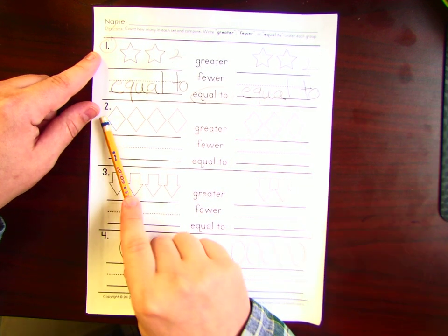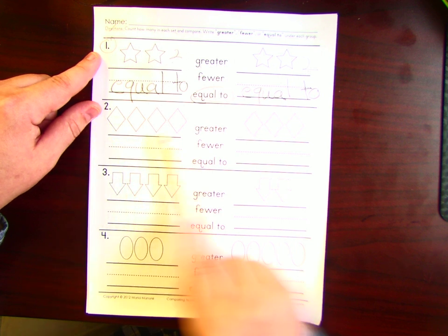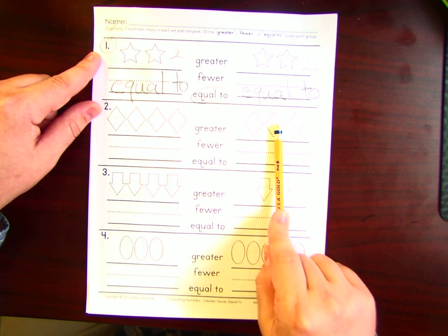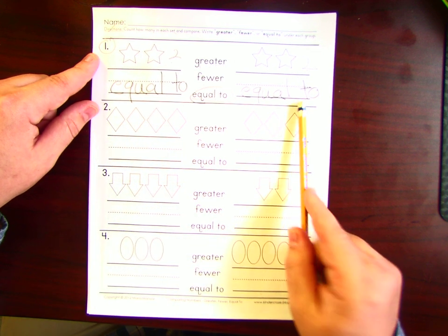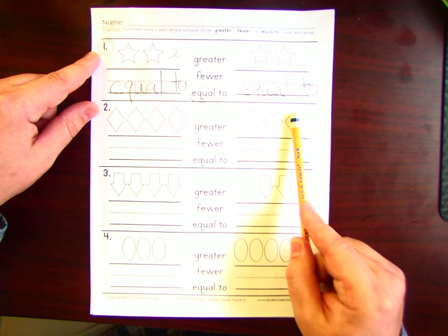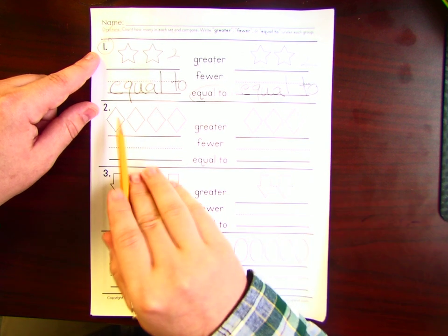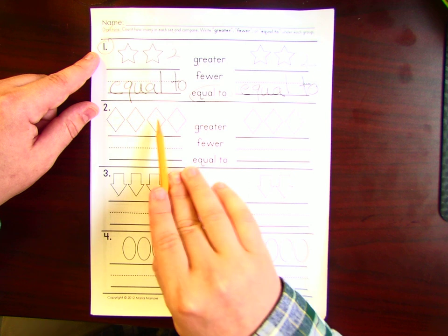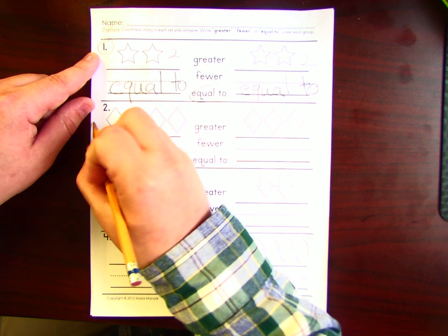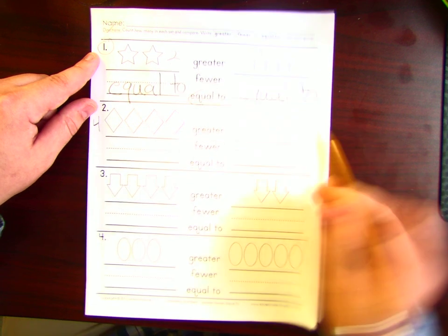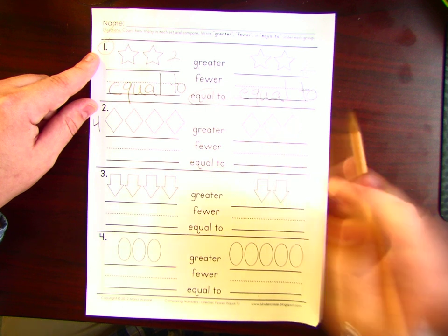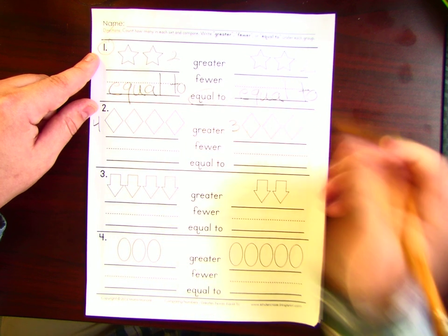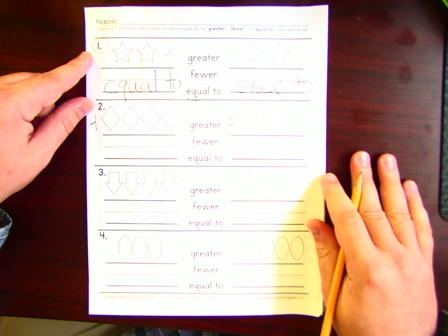Alright. Now as you look at number two, we see that these numbers are not the same. If it helps, you can count how many objects and write the number. So I'll do that right here. One, two, three, four. Well, one, two, three. Now I know how many there are.